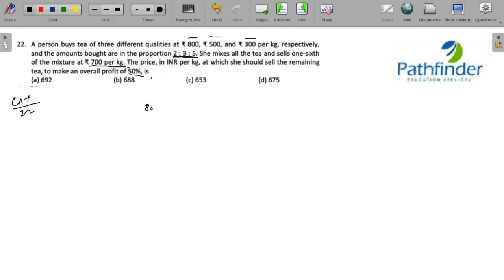So you have 800, 500 and 300 rupees per kg variety which is being mixed in the ratio 2 to 3 to 5.